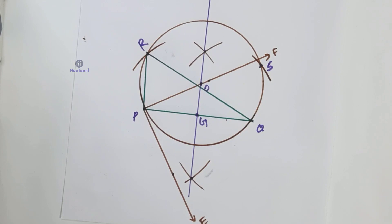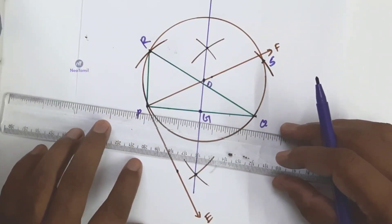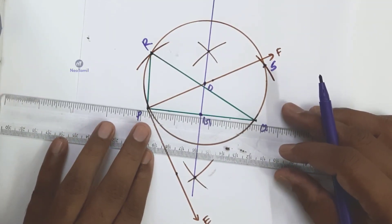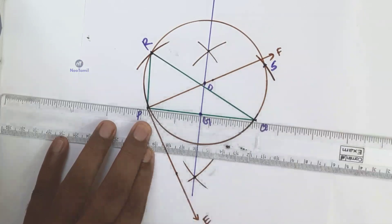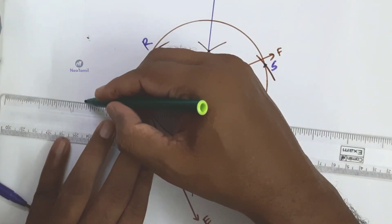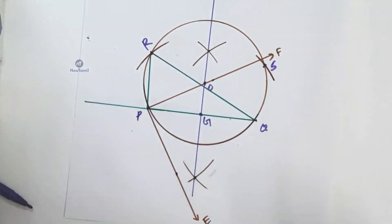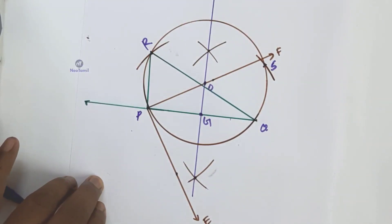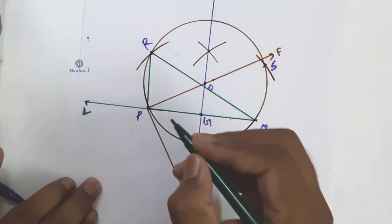Now we have the constructed triangle. Using this, we will find the altitude of the triangle. I will now measure the length of the altitude.